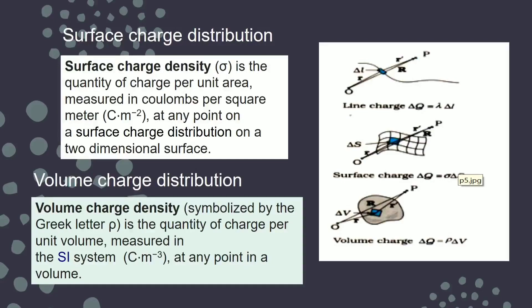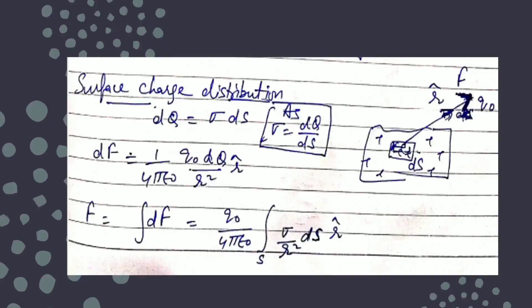So we have three quantities: linear charge density λ, surface charge density σ, and volume charge density ρ. We first understand forces for continuous charge distributions, then since E = F/q₀, field follows with the same direction. For surface charge distribution, we take a small area dS; then dq = σ dS. The small force on test charge q₀ is: dF = (1/4πε₀) × q₀ dq / r². Total force is the integration of dF over the surface.